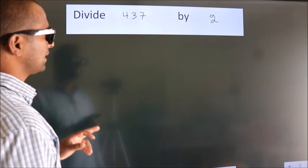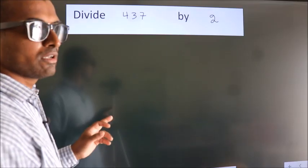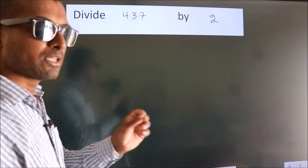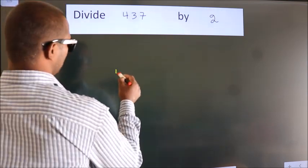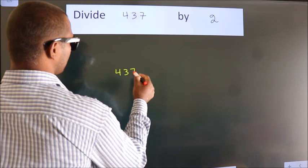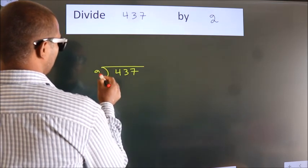Divide 437 by 2. To do this division, we should frame it in this way. 437 here, 2 here.